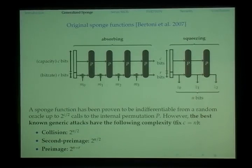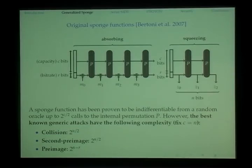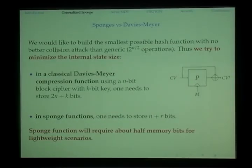The sponge construction has been proven to be indifferentiable from a random oracle up to 2^(c/2) calls to the internal permutation. However, the best known generic attacks have the following complexities: if we fix capacity c to 2n, both collision and second preimage resistance require 2^(n/2) work, while preimage resistance requires 2^(n-r) work.